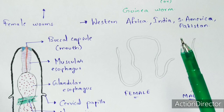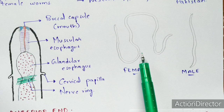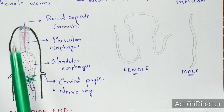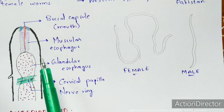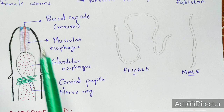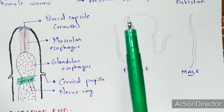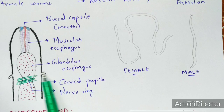Now let us look at the structure of Dracunculus medinensis, the Guinea worm. The female worm is very much larger compared to the male worm. At the anterior end, there is a structure called the buccal capsule, which is the mouth. Its main function is consuming gastric juices when present in a human host, or juices present in crustacean hosts. Other structures include the muscular esophagus, glandular esophagus, cervical papillae, and the nerve ring.